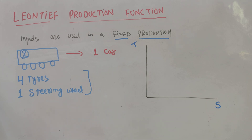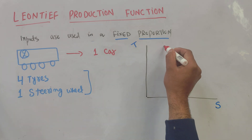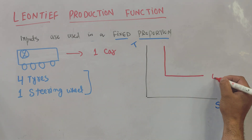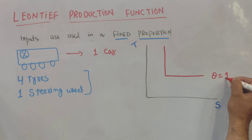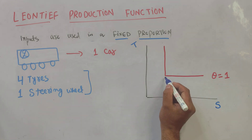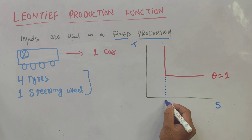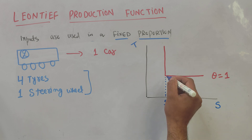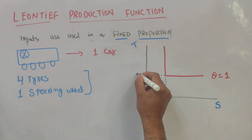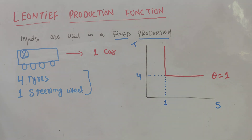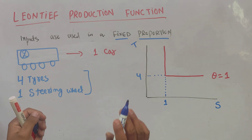The isoquant in case of a Leontief production function looks like this — they are L-shaped. For Q equal to one, that means to produce one car, we need one steering wheel and four tires. Let me explain why it is L-shaped.